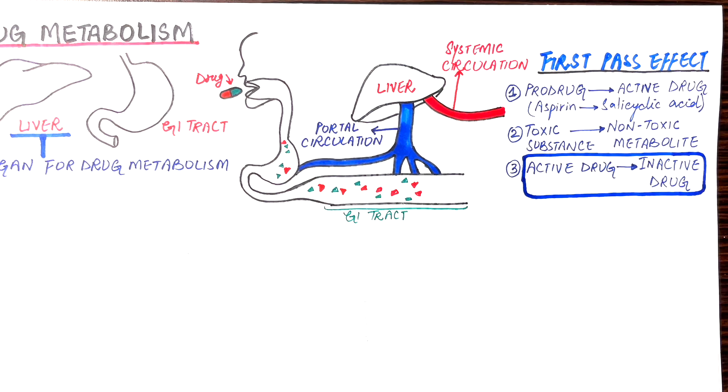Kidneys cannot excrete lipophilic drugs because the drug is reabsorbed back into the bloodstream through the renal tubules. That's why, in order to get rid of the drug, it must be converted first into a hydrophilic state by making it polarized or charged.